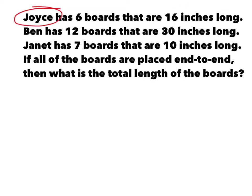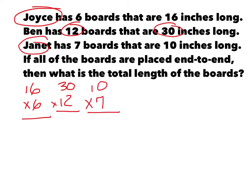Joyce, that would be 16 times 6. Ben is 12 times 30. And then we're going to have Janet for 10 times 7. So that would be 96, 360, and 70. We must add all of those together. That is 430 plus 96, which is 526. Did anybody have 526? All right, you're good so far, but if that was your final answer, then you've missed it. You have to take it to feet next.